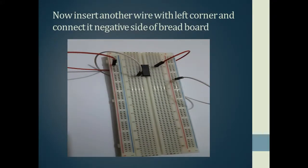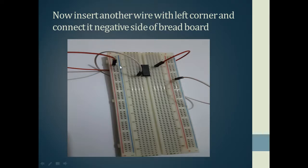Now inserting another wire at the left corner and connecting it with the negative side of the breadboard. In this breadboard I have assumed this one to be the positive rail and this one to be the negative rail. It doesn't matter which side you choose for positive and negative — it is up to you. I am using this side as positive and this as negative just for simplicity so the connections can be seen easily.